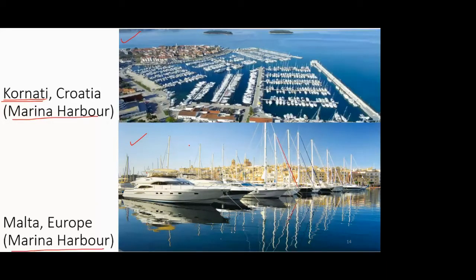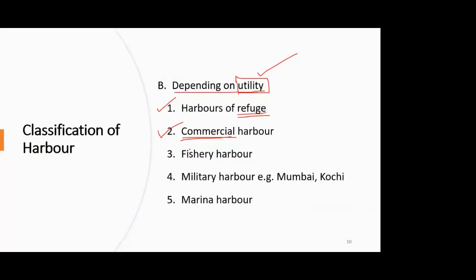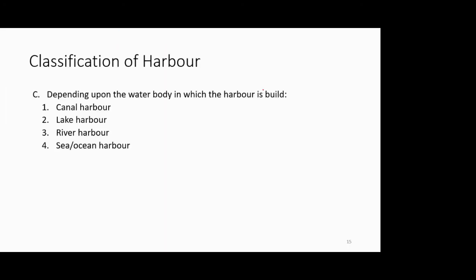That covers all five classifications of harbors based on utility: harbor of refuge, commercial harbor (example: Shanghai), fishing harbor (example: Chennai), military harbor (examples: Mumbai, Kochi, Visakhapatnam), and marina harbor (examples: Croatia, Malta). Military harbors at Mumbai and Kochi are among the major ones in India. The photograph shown earlier was of Visakhapatnam's naval facilities.